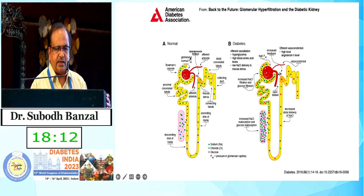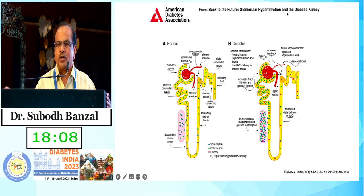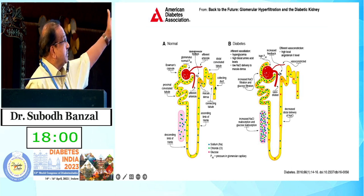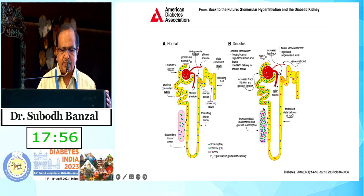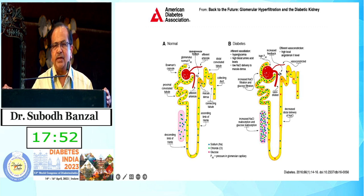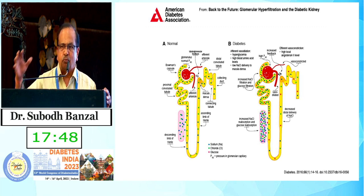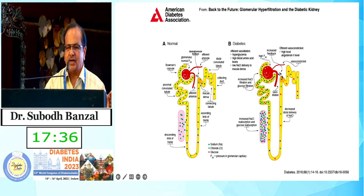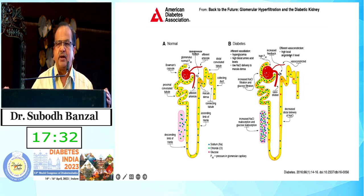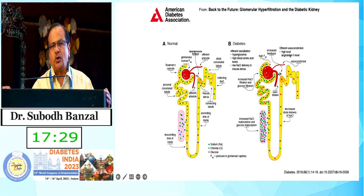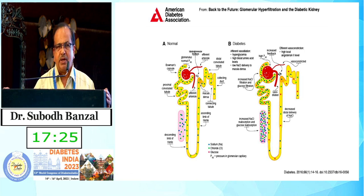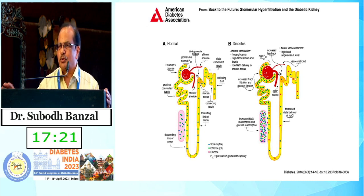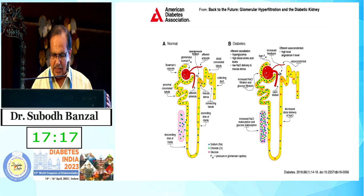In normal renal physiology, we have afferent and efferent arterioles with normal intraglomerular pressure and normal filtration, with communication between juxtaglomerular cells and glomeruli. In diabetes, hyperglycemia causes increased load of glucose and amino acids, with more reabsorption in proximal tubules and less delivery of sodium and glucose to the distal tubule. This leads to afferent arteriole dilation, efferent constriction, and a role of angiotensin II, causing intraglomerular pressure to rise and hyperfiltration — the start of diabetic kidney disease.